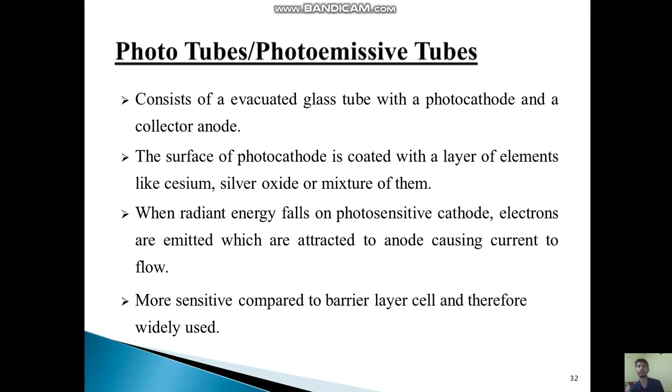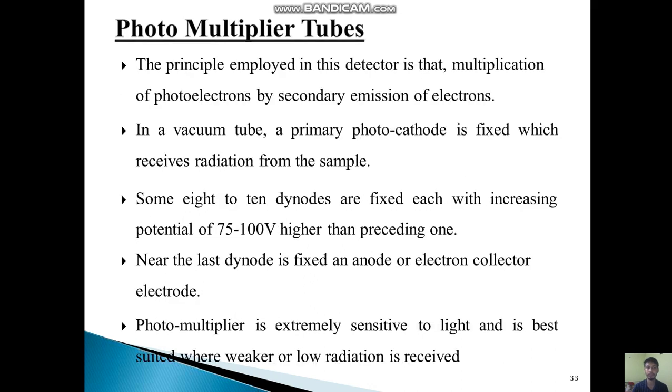The photo tube consists of an evacuated glass tube with a photocathode and a collector anode. The surface of the photocathode is coated with a layer of elements like cesium, silver oxide, or a mixture of them. When radiant energy falls on the photosensitive cathode, electrons are emitted which are attracted to the anode, causing current to flow. This is more sensitive compared to barrier layer cells and therefore widely used.